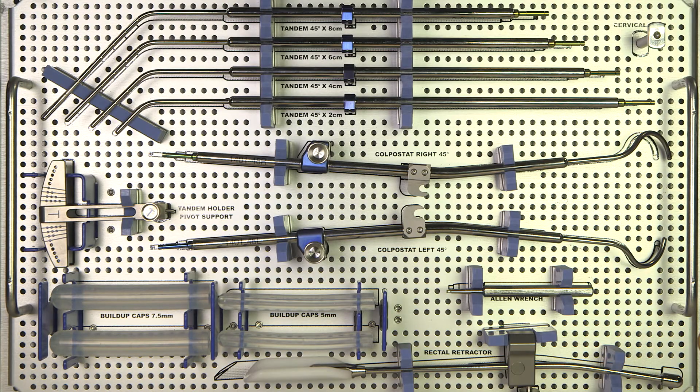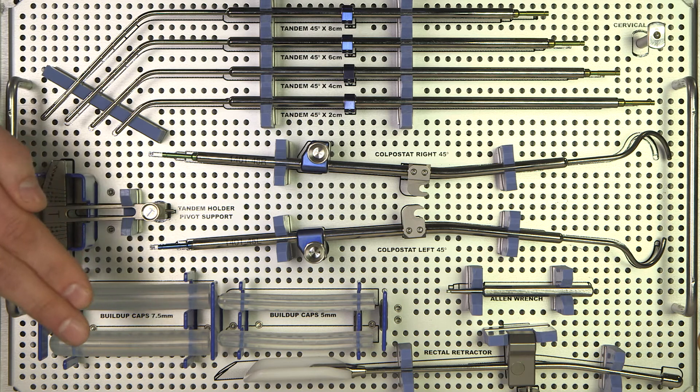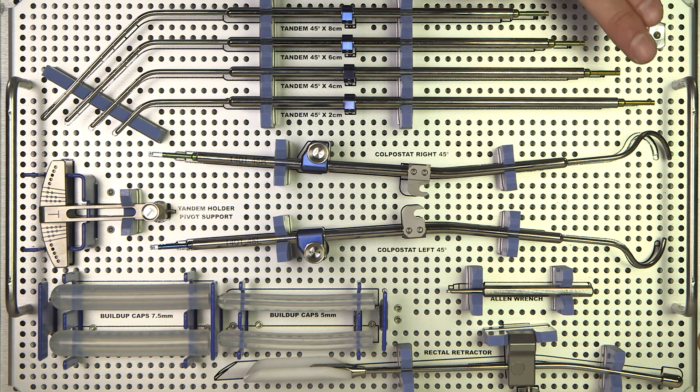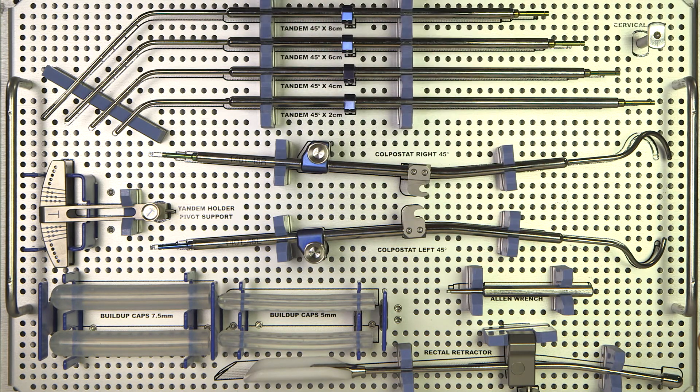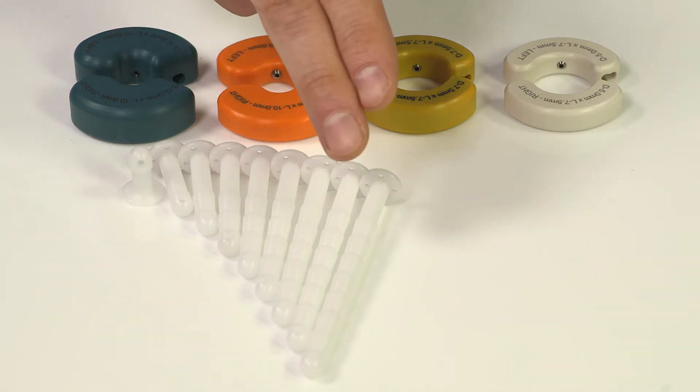The other items are the wing bracket, silicone build-up caps, the rectal retractor, cervical stop and the corresponding Allen wrench. Build-up caps are available as optional items in different dimensions. Here you see the 4 most commonly used. Smith sleeves are also available as optional items.